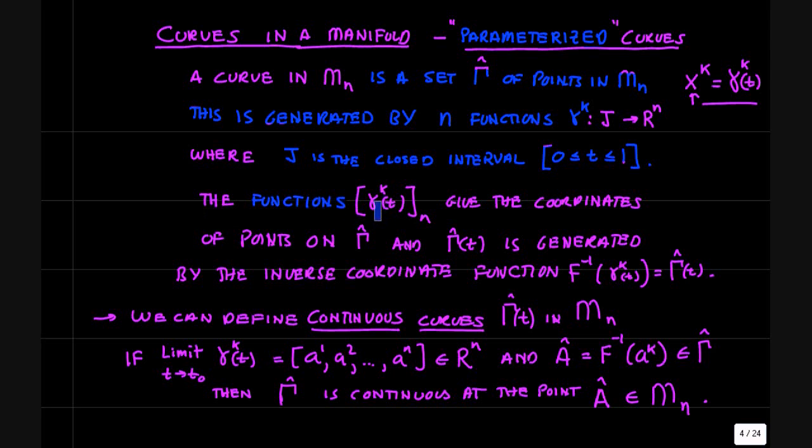And so in the coordinate space of the manifold, we have the coordinate functions gamma k. So if you want to know the coordinates of a point on gamma, you evaluate gamma k at a value of t, and that gives you a point in the coordinate space of the manifold that lies on the curve gamma. The functions gamma k give the coordinates of points on gamma, and in that way gamma as a function of t is generated on the manifold by the inverse coordinate function, f inverse acting on the coordinate functions.